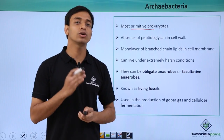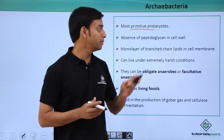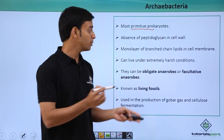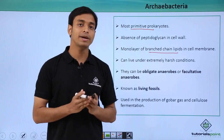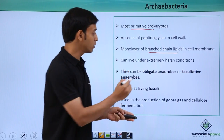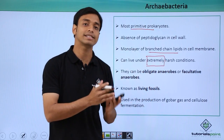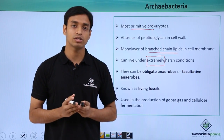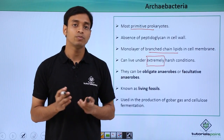Archaebacteria have a monolayer of branched chain lipids present in the cell membrane — this is a very important characteristic. Another key characteristic is that they can live under extremely harsh conditions. Examples of such conditions include very high salt concentrations and very high temperatures, around 80 degrees centigrade, which may be found in hot sulfur springs.